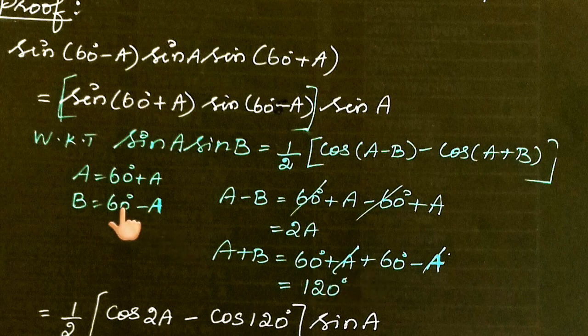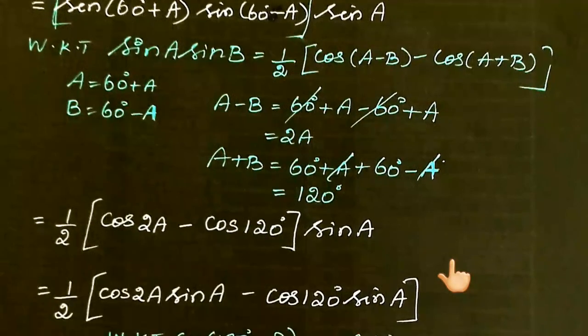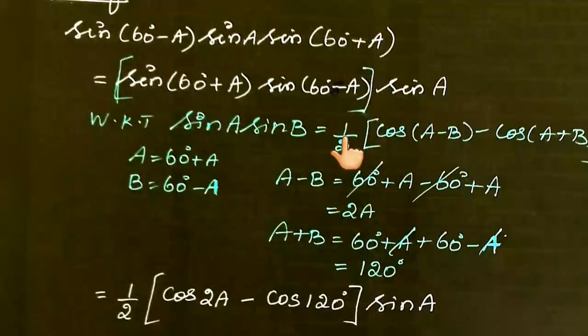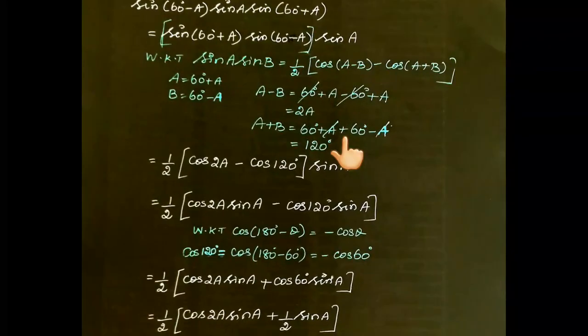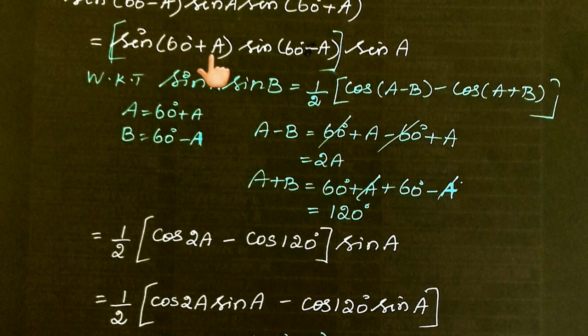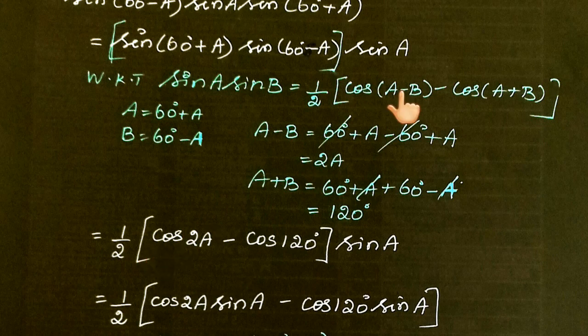A+B = 60+A+60-A = 120. Substituting into the formula: 1/2[cos(A-B) - cos(A+B)] becomes 1/2[cos(2A) - cos(120)]. Multiplying by sin(A), we get 1/2[cos(2A)sin(A) - cos(120)sin(A)].